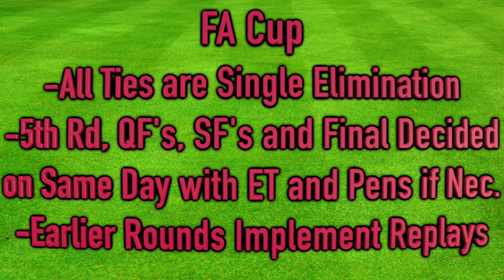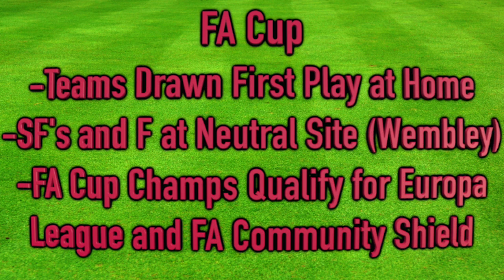One important format nuance: every tie is single elimination — if you lose once, you're out. However, from the fifth round down — the quarterfinals, semifinals, and final — those ties are all decided on the same day, meaning if a quarterfinal game is tied after 90 minutes, we'll have extra time and if needed penalties to determine a winner. That's not the case for every round prior to the fifth round. In those earlier rounds, if a game is tied after 90 minutes, they will play a replay the following week — another 90-minute game switching which team is at home — and if that replay is still level after 90 more minutes, we go to extra time and penalties.